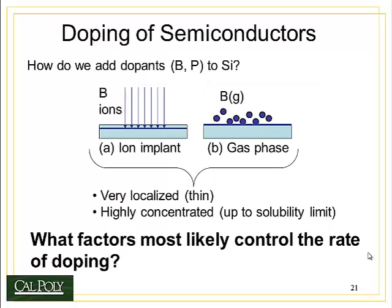How do we dope semiconductors? There are two commonly used methods. One is ion implantation, where you bombard the surface of silicon with, for example, boron ions. Another approach is to use the gas phase, where you put a boron gas above the silicon and let the boron atoms gradually diffuse into the silicon material beneath it. In either case, you get very localized and very thin layers of boron inside the silicon, which can be highly concentrated up to the solubility limit of boron in silicon.